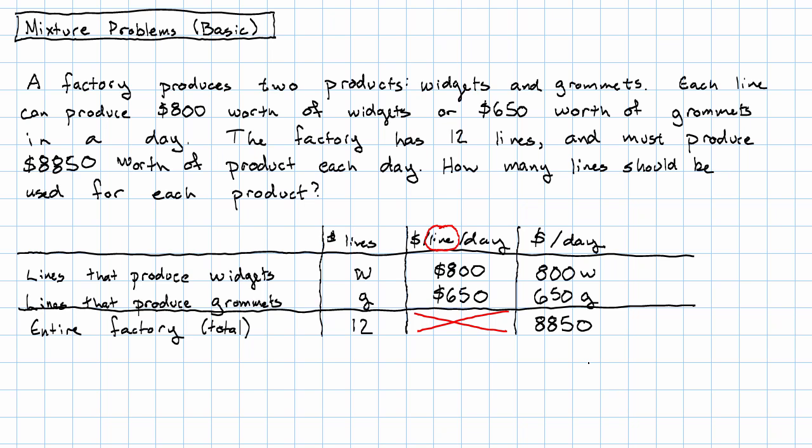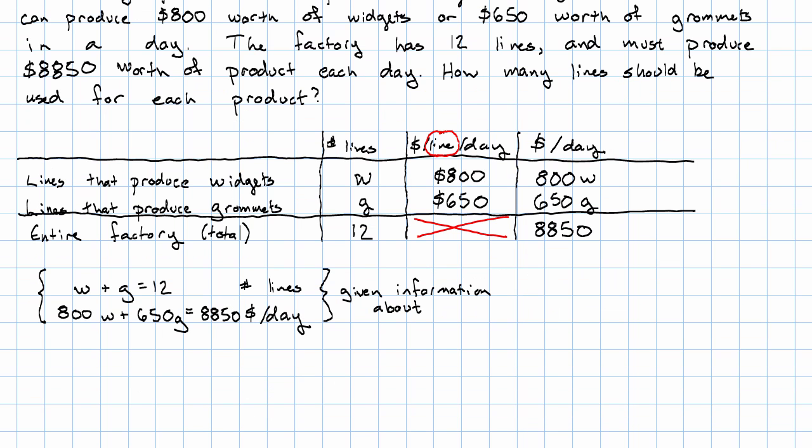The system of equations that this gives us is one equation about the number of lines and another equation about the dollars per day. And notice that these two equations were the two things that we were given information about. Notice that this system is set up with variables on the left, constants on the right. This is well set up for elimination.